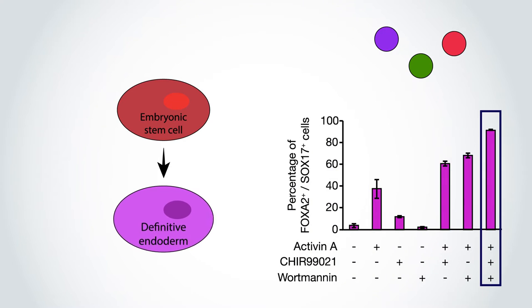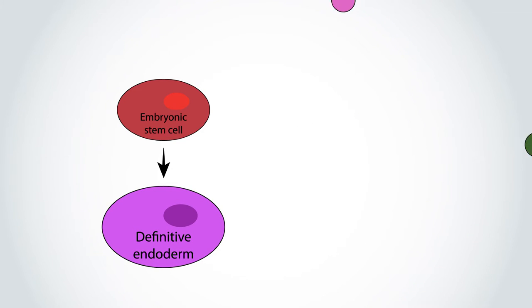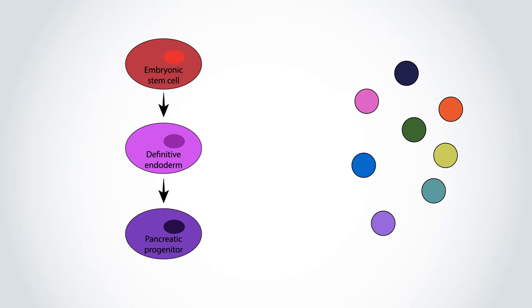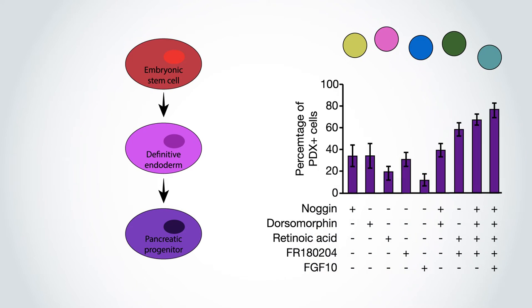With these endodermal cells in hand, the researchers then experimented with another set of chemicals to push them into being pancreatic progenitor cells. The most successful blend used five factors, working synergistically to convert about three-quarters of cells.